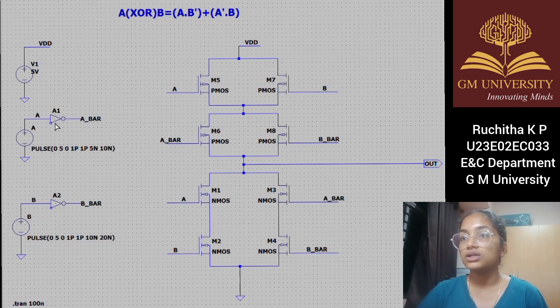When A is 0 and B is 1, A bar is 1 and B bar is 0. Both PMOS and NMOS are on. The output is 1 high, which matches XOR behavior.